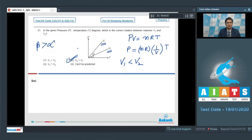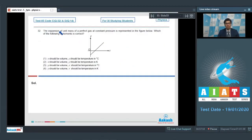Now, let us proceed to question number 32. Question number 32 says, the expansion of unit mass of a perfect gas at constant pressure is represented in the figure below. Which of the following statements is correct?